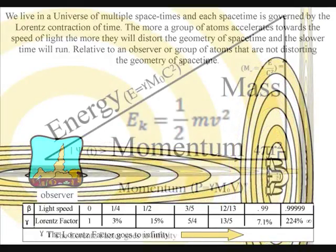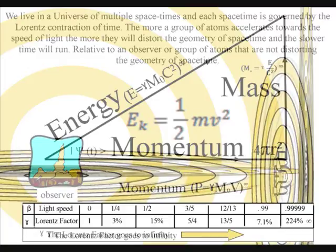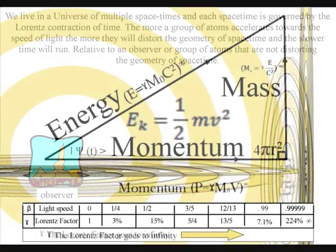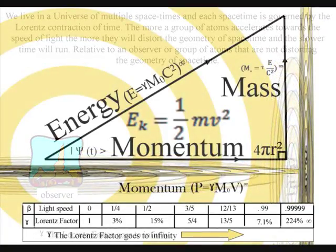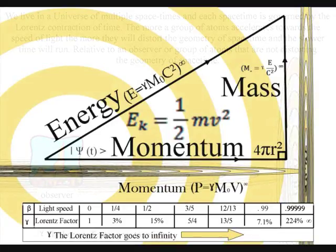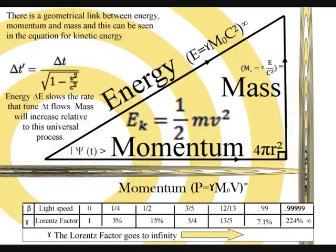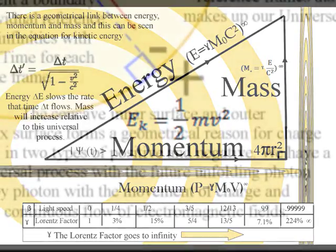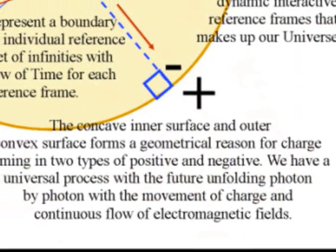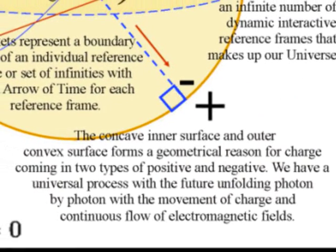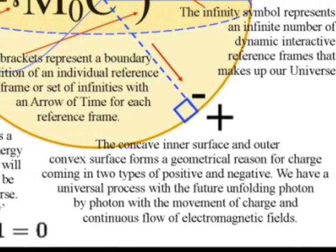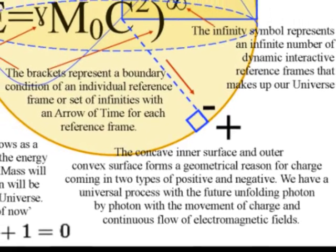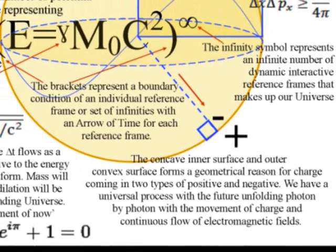Kinetic energy is energy in motion, and at any moment in time we have two times half the mass with the velocity squared to get the surface area of the sphere. The surface area of the sphere represents the movement of charge, with the concaved inner surface representing negative charge, and the outer convex surface representing positive charge.